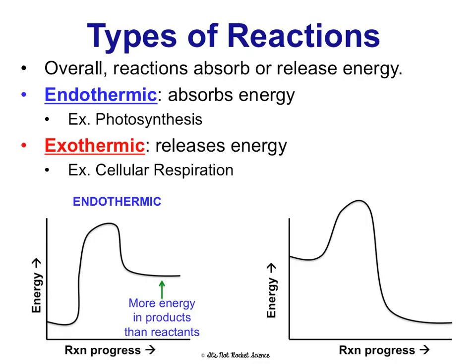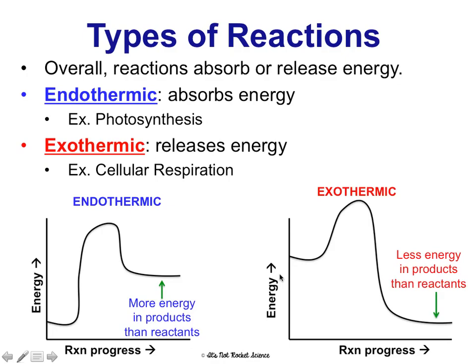Exothermic means you're releasing energy. Cellular respiration is a chemical reaction where energy is released — we're breaking apart food to release the energy stored in the bonds. In an exothermic reaction we start with more energy and end with less, because energy is being given off.